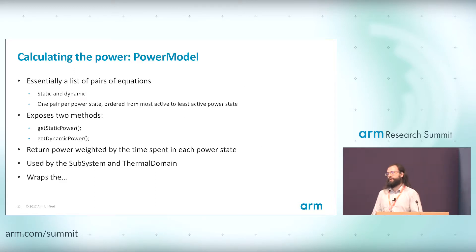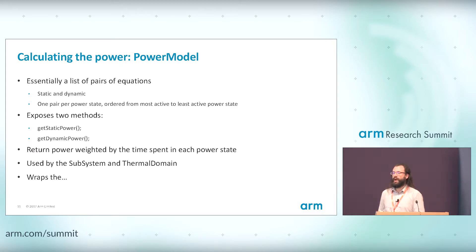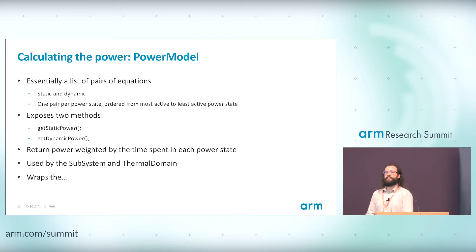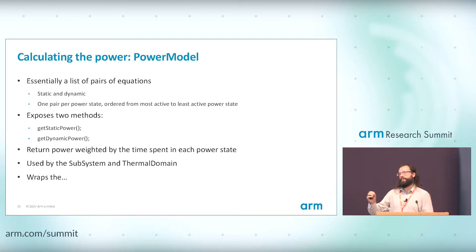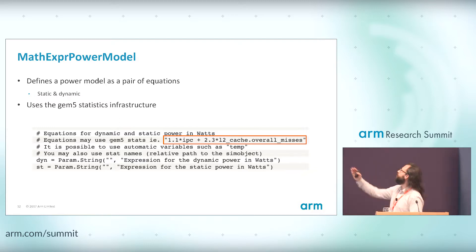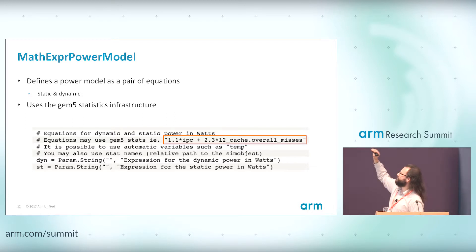Now onto the power models themselves. The power model is a SimObject in GEM5 and is part of the subsystem. It has two equations — static and dynamic — but actually has multiple sets of these equations, one set per power state: one for the on state, one for clock gated, and so forth. There are two methods: get dynamic power and get static power. The power returned is weighted by the amount of time spent in each state. It wraps the math expression power model, which lets you specify an equation encoding coefficients for different parameters — this is where you encode the models Jeff described. You reference different objects in the subsystem to calculate your power.